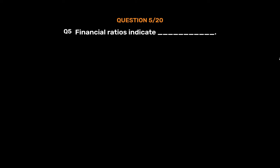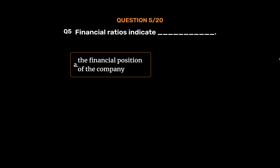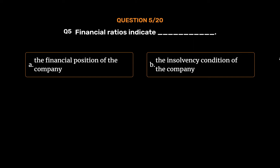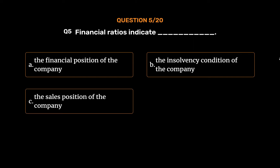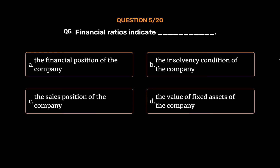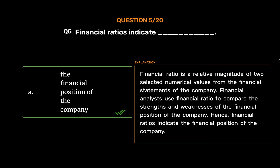Question number 5. Financial Ratios indicate: Option A: The Financial Position of the Company. Option B: The Insolvency Condition of the Company. Option C: The Sales Position of the Company. Option D: The Value of Fixed Assets of the Company. The correct answer is Option A: The Financial Position of the Company. Financial Ratio is a relative magnitude of two selected numerical values from the financial statements. Financial analysts use Financial Ratios to compare the strengths and weaknesses of the financial position of the company.